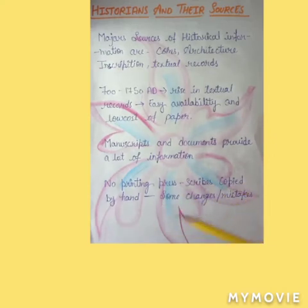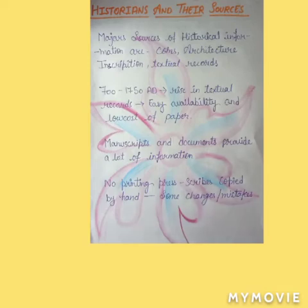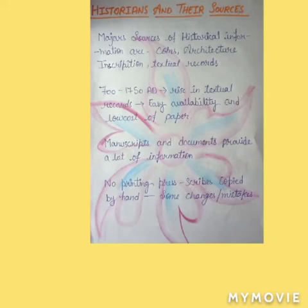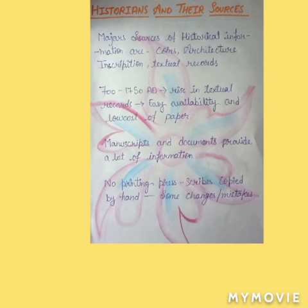No printing press था, scribes copied by hand — some changes and mistakes होती थीं। India में कोई printing press नहीं थी, तो scribes होते थे जो हाथ से लिखना शुरू करते थे। जैसे एक book लिखी गई तो उसकी copies बनाई जाती थीं — scribes अपने हाथ से लिखते थे। लेकिन वो accurate नहीं हो सकती थीं क्योंकि हाथ से लिखने में कहीं न कहीं mistakes हो जाती थीं।